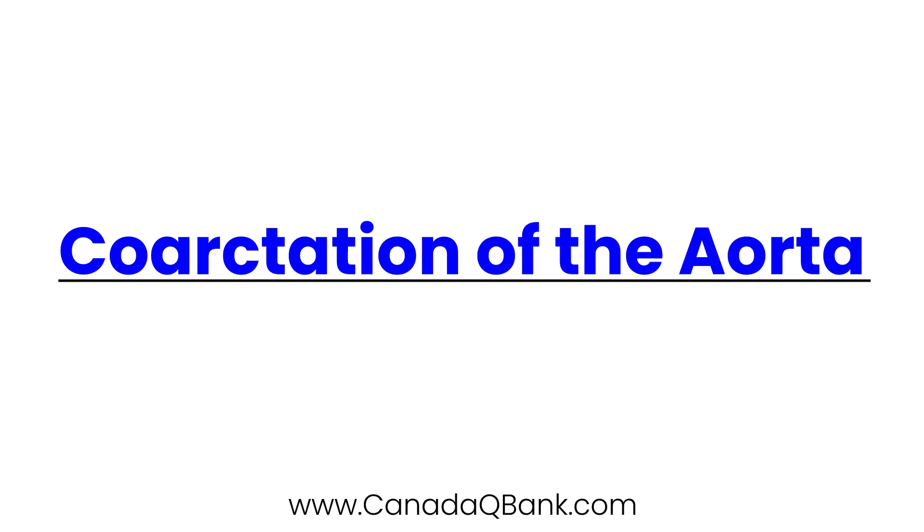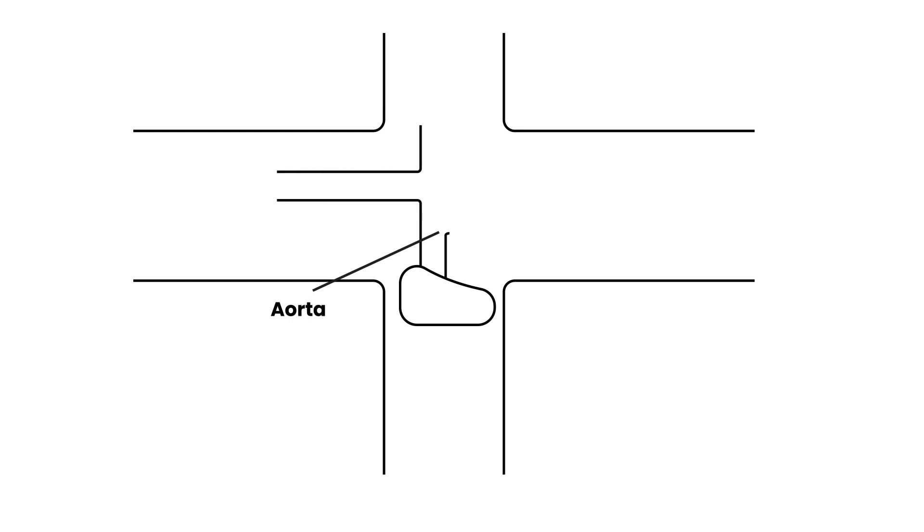Coarctation of the aorta is the topic and I'll start by drawing a very basic diagram of this anatomy. Here you have a person with arms and the neck, here's the heart, and coming out from the heart is a large blood vessel that we know as the aorta. I'll draw some branches, one going to one arm, one branch to another arm, another branch to this arm, and then finally the aorta curves down into the descending aorta.